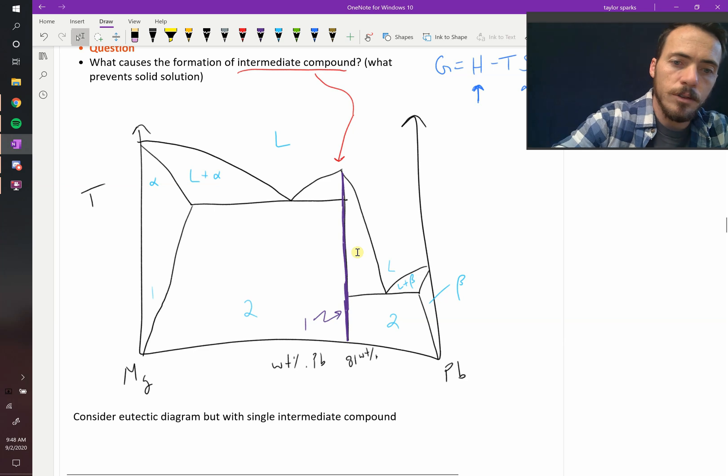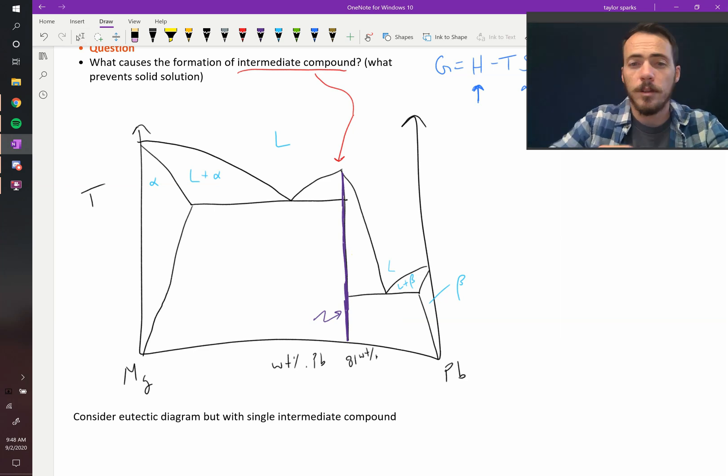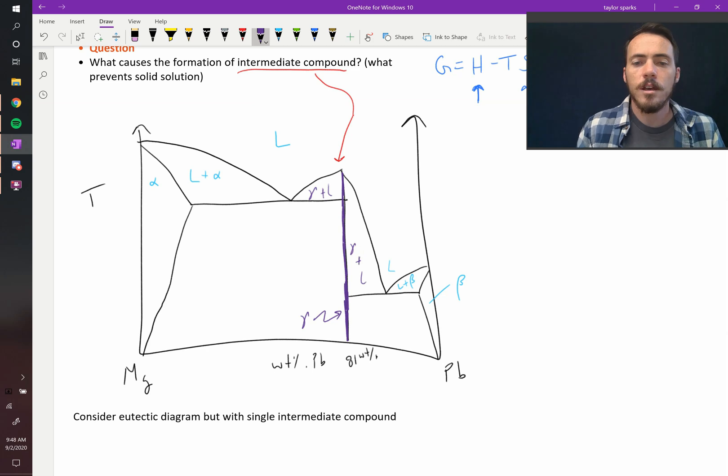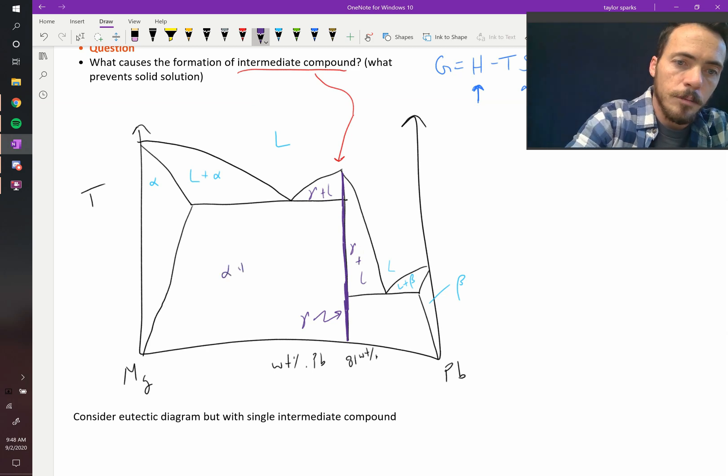So that is this diagram. Now we can finish labeling it. So let's give names to this. So that line compound, let's call it gamma, since we've already used alpha and beta, that's gamma. That makes this gamma plus liquid. And over here, that also makes this gamma plus liquid.